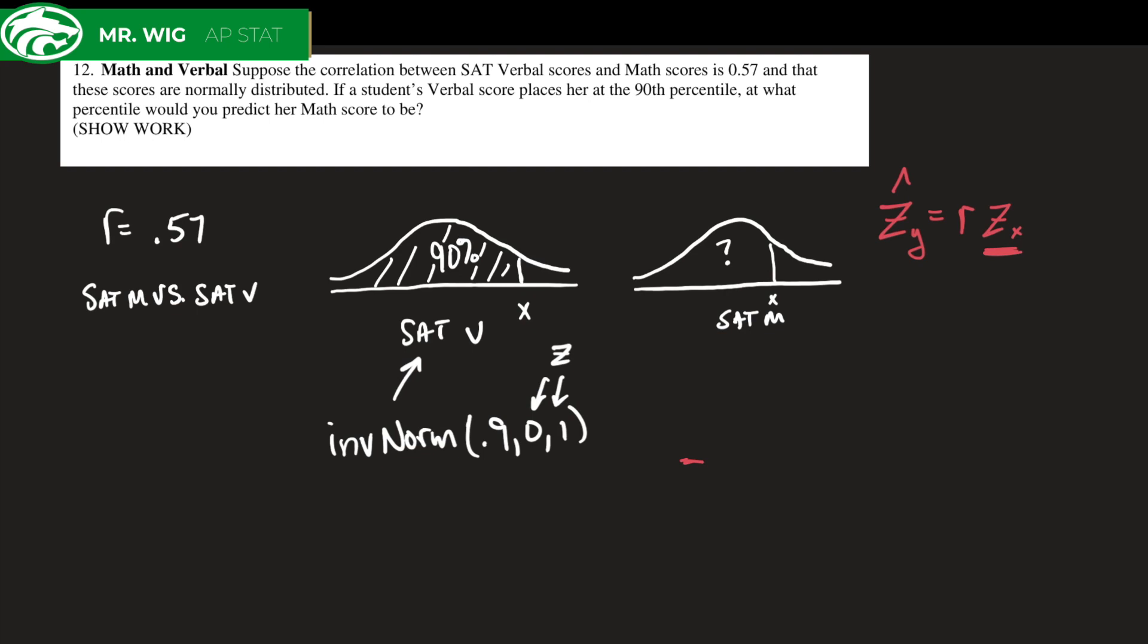If I type that in, it's going to give me back an actual z-score for that particular value. Turns out that we do that, we're going to get 1.28 approximately for my z-score for the y value.